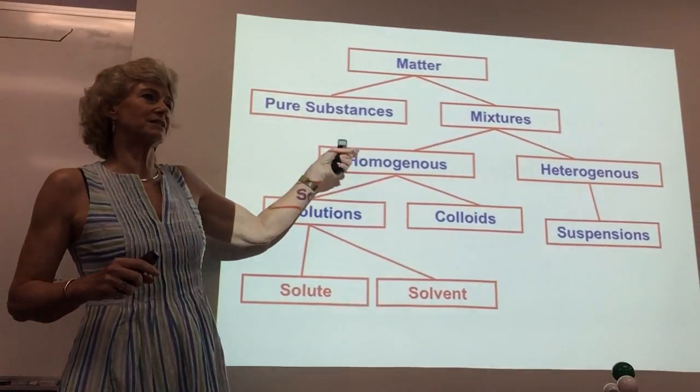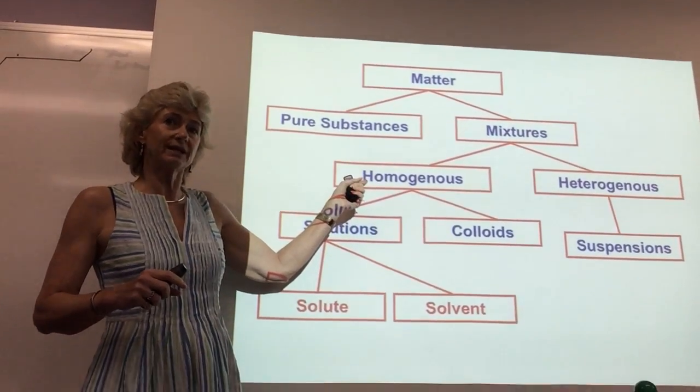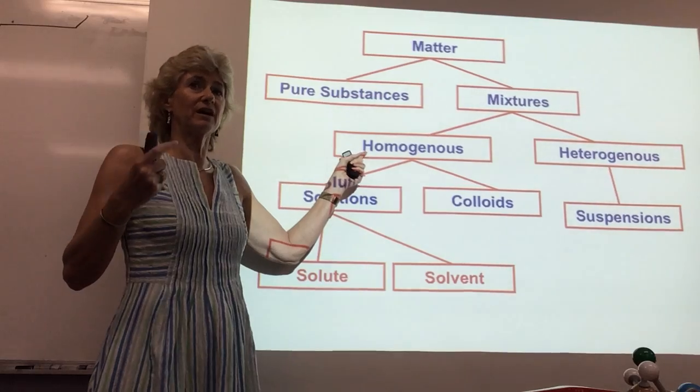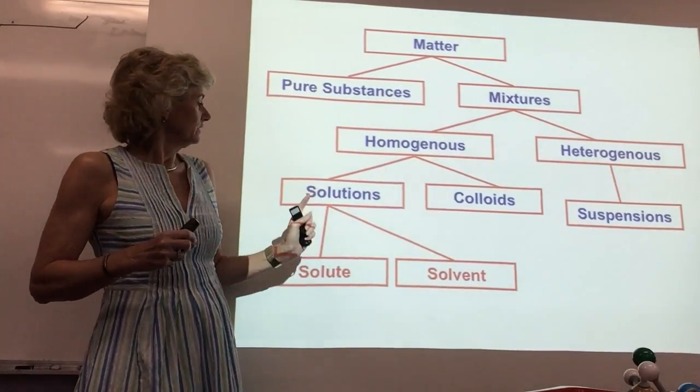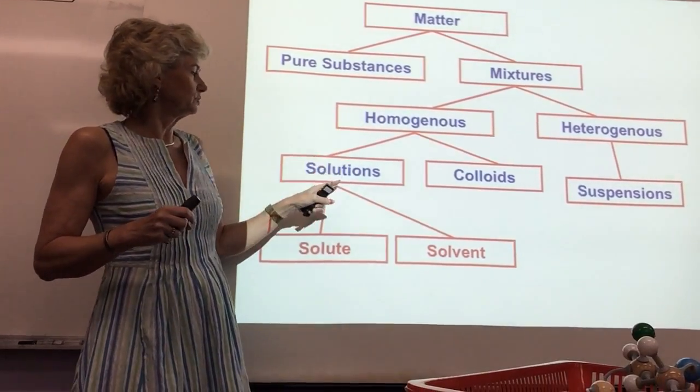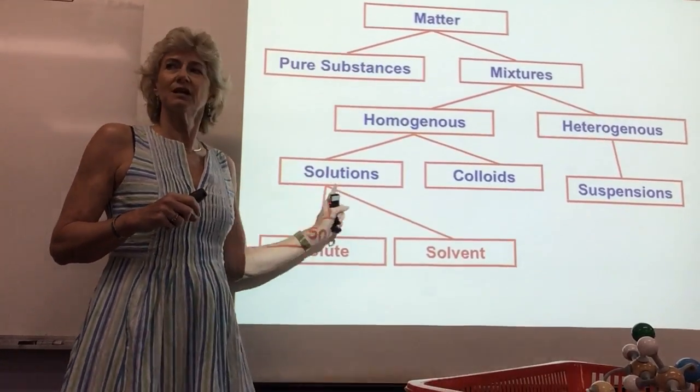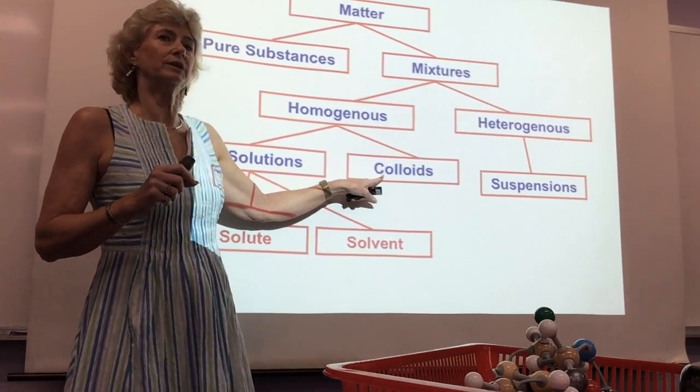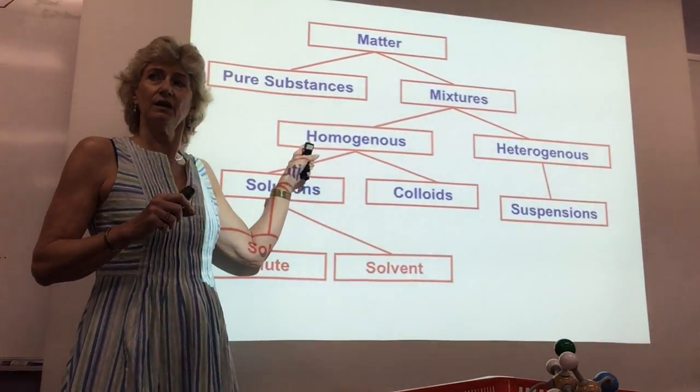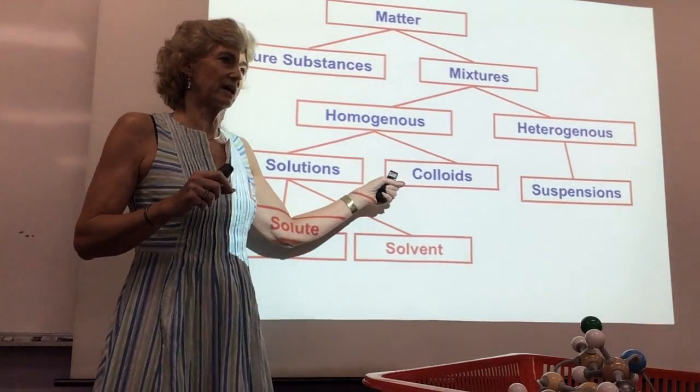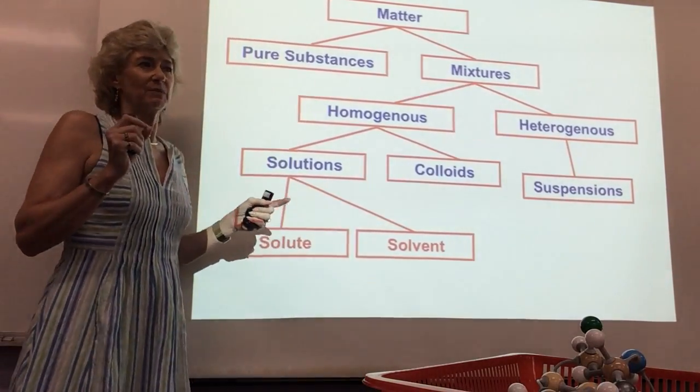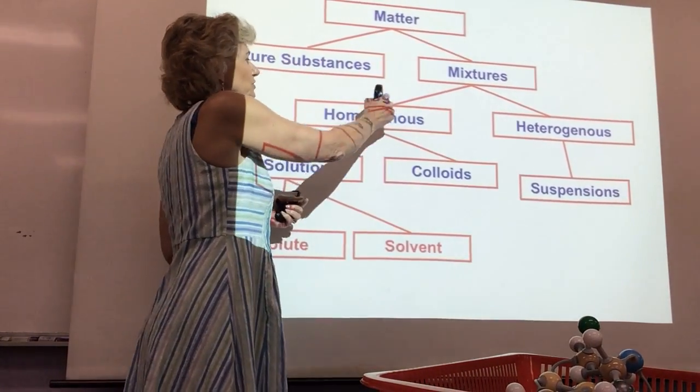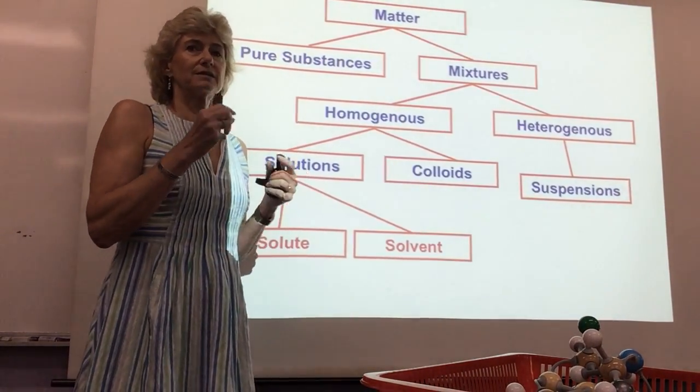Homogeneous are a little hard to tell from pure substances when you look at them. If you look at distilled water and you look at tap water, you're not going to be able to see the difference. You're going to have to know that one is tap and one is distilled. And then we call homogeneous mixtures solutions. But there's a little subcategory when the particles are bigger and that's called a colloid. It looks homogeneous, but the particles are big enough to scatter light.